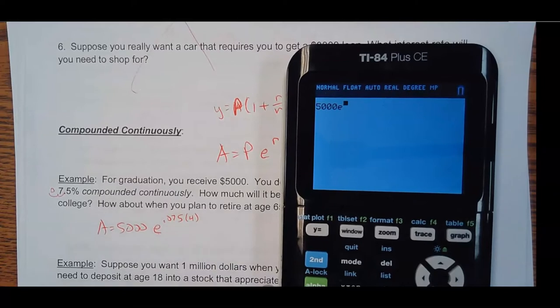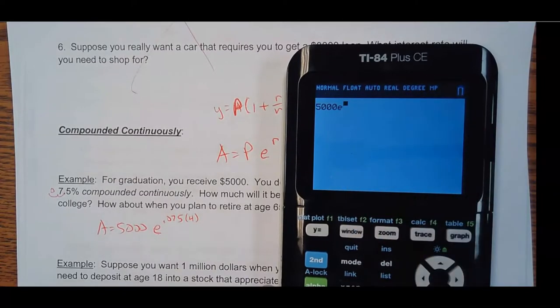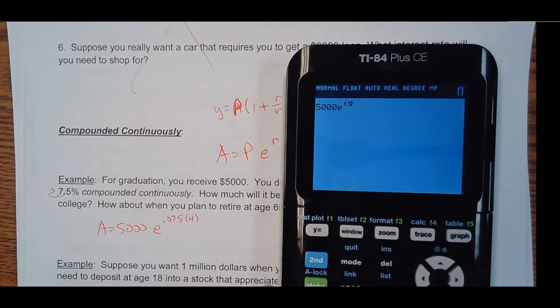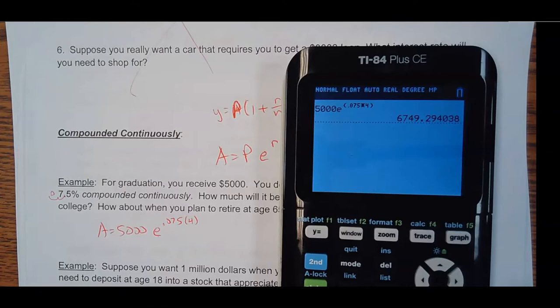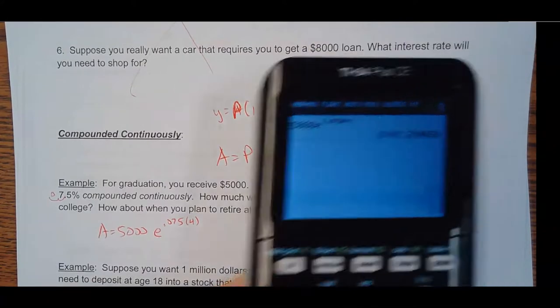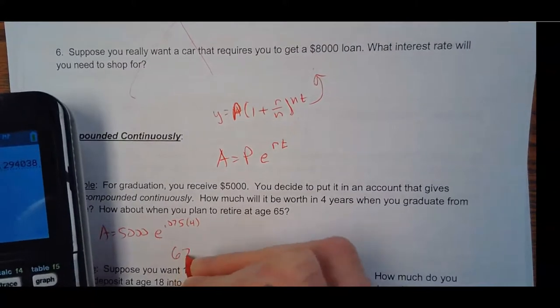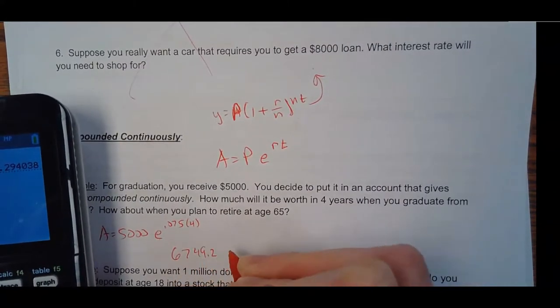And in the exponent, if you have a newer calculator, you can just type it. If you have an older calculator, you have to put parentheses around this. So I'll just practice by putting the parentheses for you. Times 4 in parentheses. So you would have, at the end of four years, you'd have $6,700. So $6,749.29.